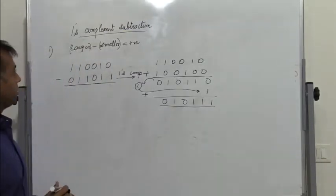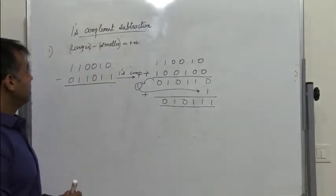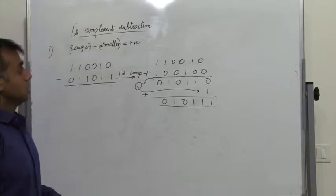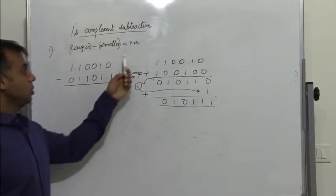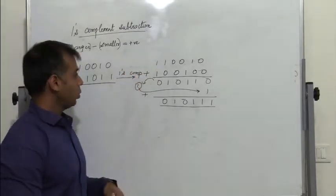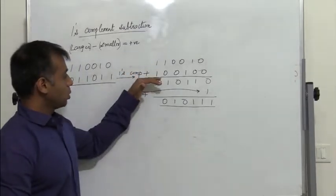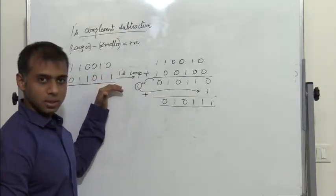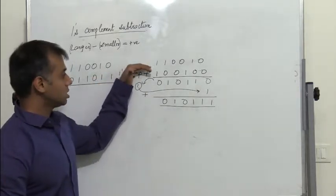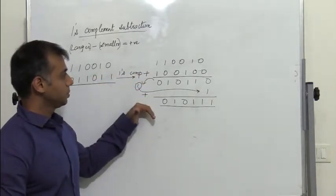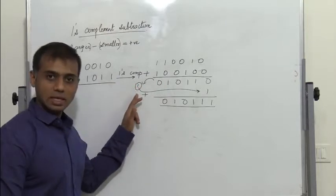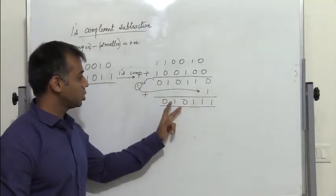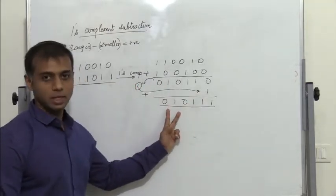We must remember that when we subtract the larger number minus the smaller number, the answer is always positive. And when we add the 1's complement of the smaller number to the larger number, we always end up getting a carry, and this carry is added to get the final result.